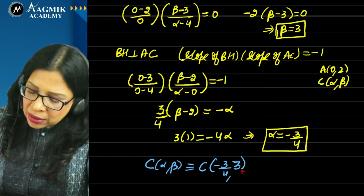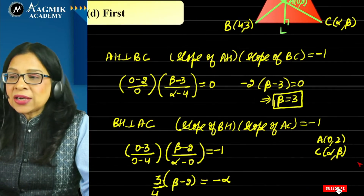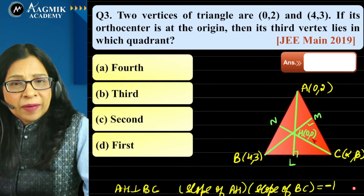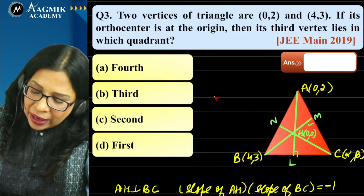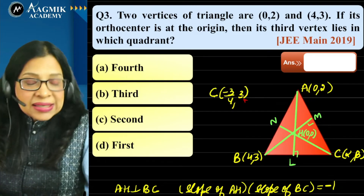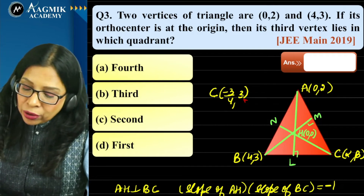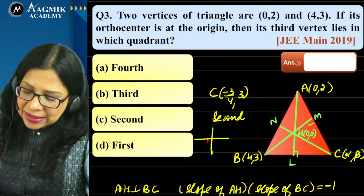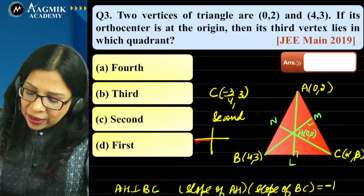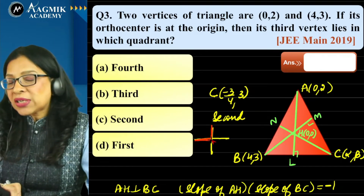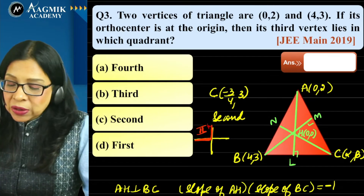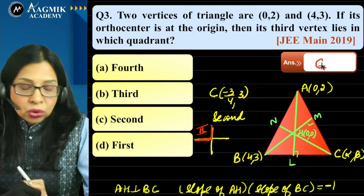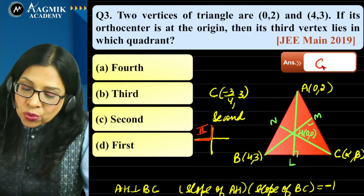C = (−3/4, 3): x is negative, y is positive — this is the second quadrant. So the third vertex lies in the second quadrant, which is option C.